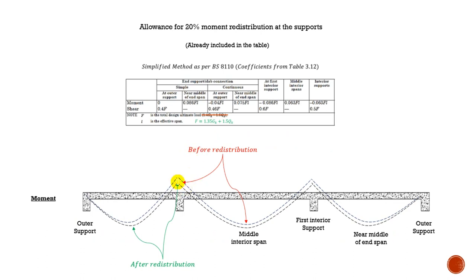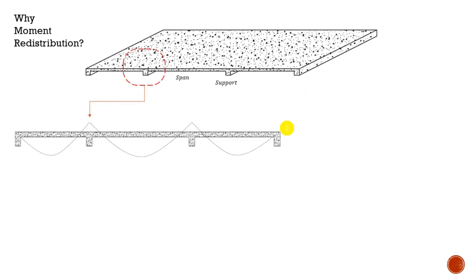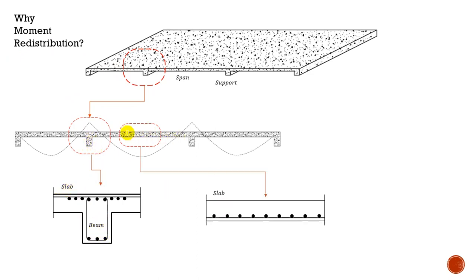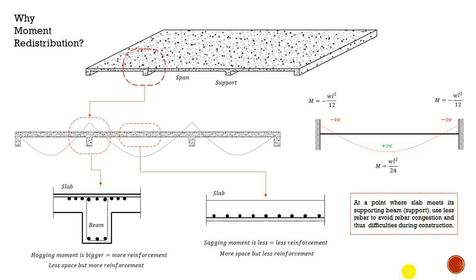What happens exactly is: this is the bending moment before redistribution, and the one below it is the bending moment after redistribution. Since you are using the simplified method, the 20% moment redistribution is already included in this table — you don't have to worry about its calculation. Somebody might ask: why would you even mention this, what's the purpose of moment redistribution? We have the span and we have the support. We have the hogging moment and this slab-beam connection, and right there at maximum sagging moment we only have the slab — and there we have a space issue.